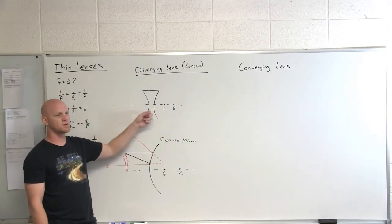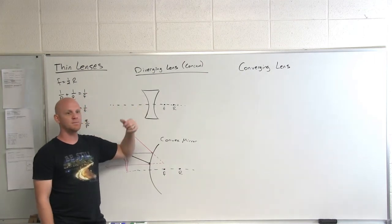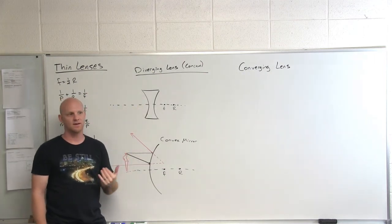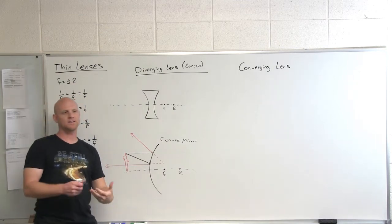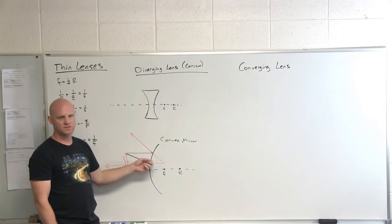The same thing is going to be true with the diverging lens, except instead of reflection, the light's going to pass through the lens and be refracted instead. And those refracted rays might converge, or they might diverge. And you can guess what's going to happen with the diverging lens. Same thing happened with the diverging mirror.